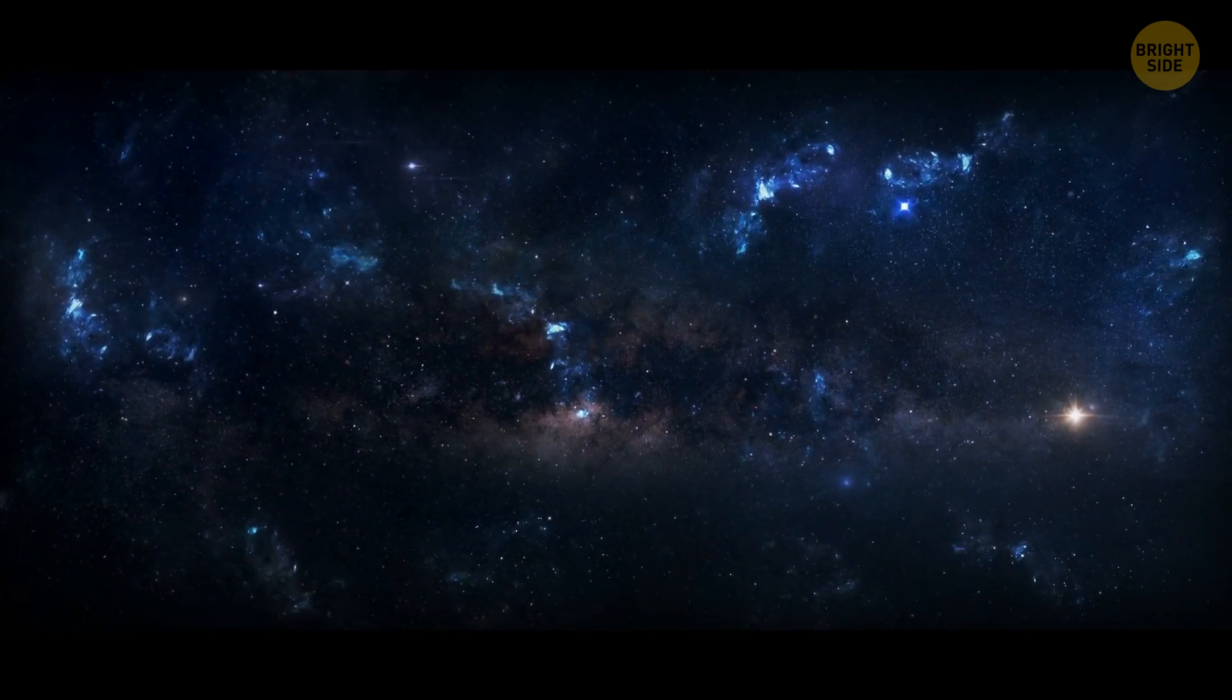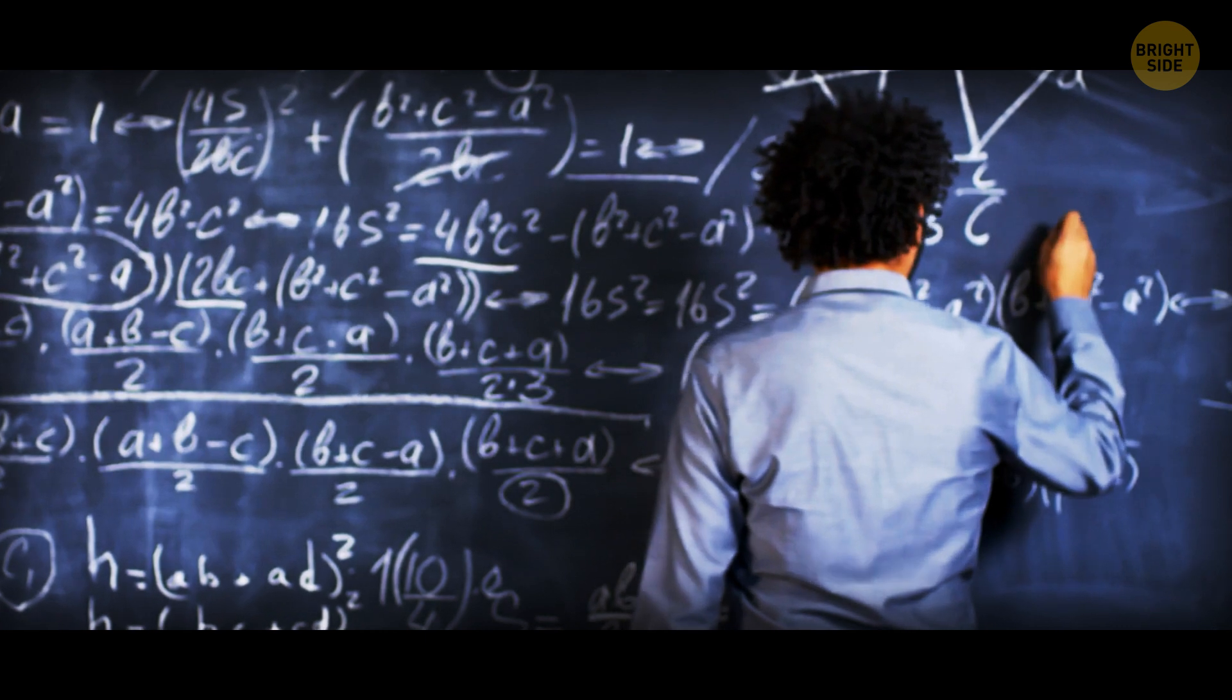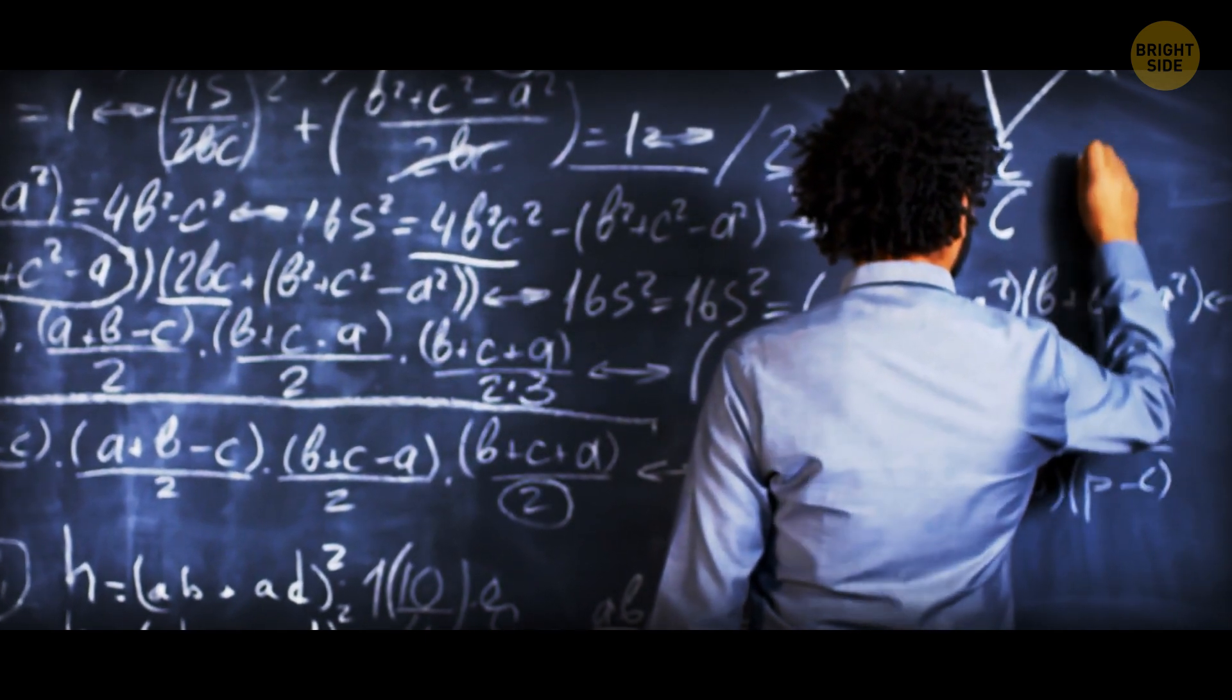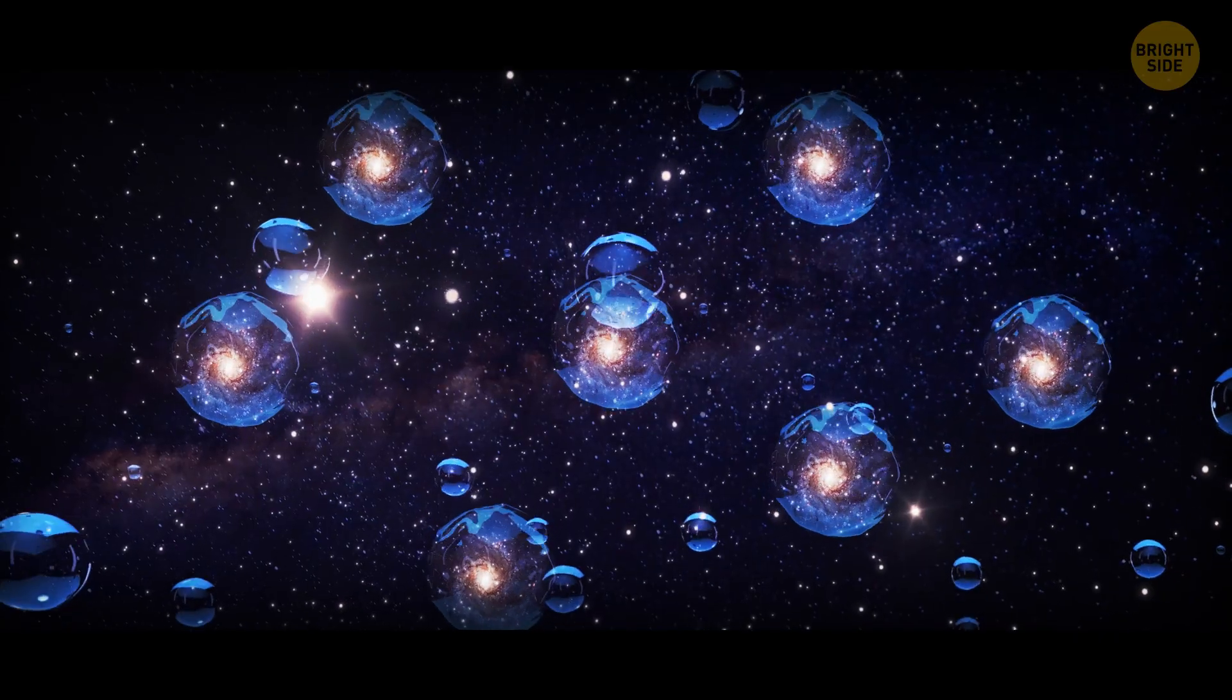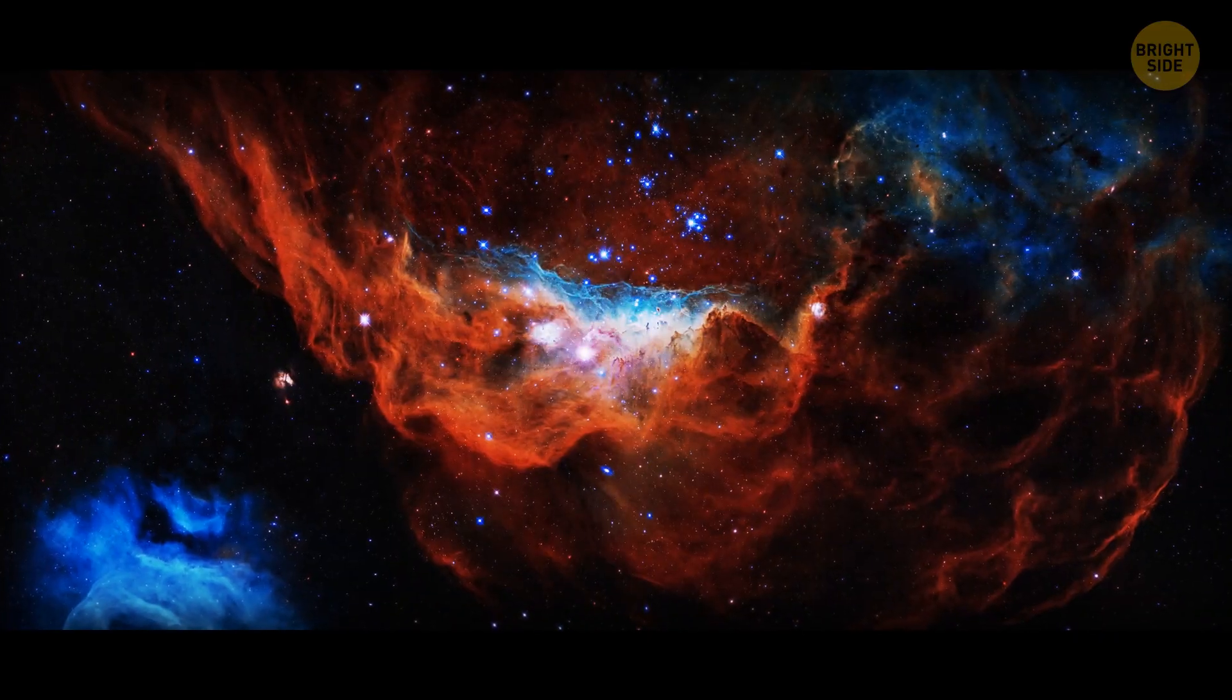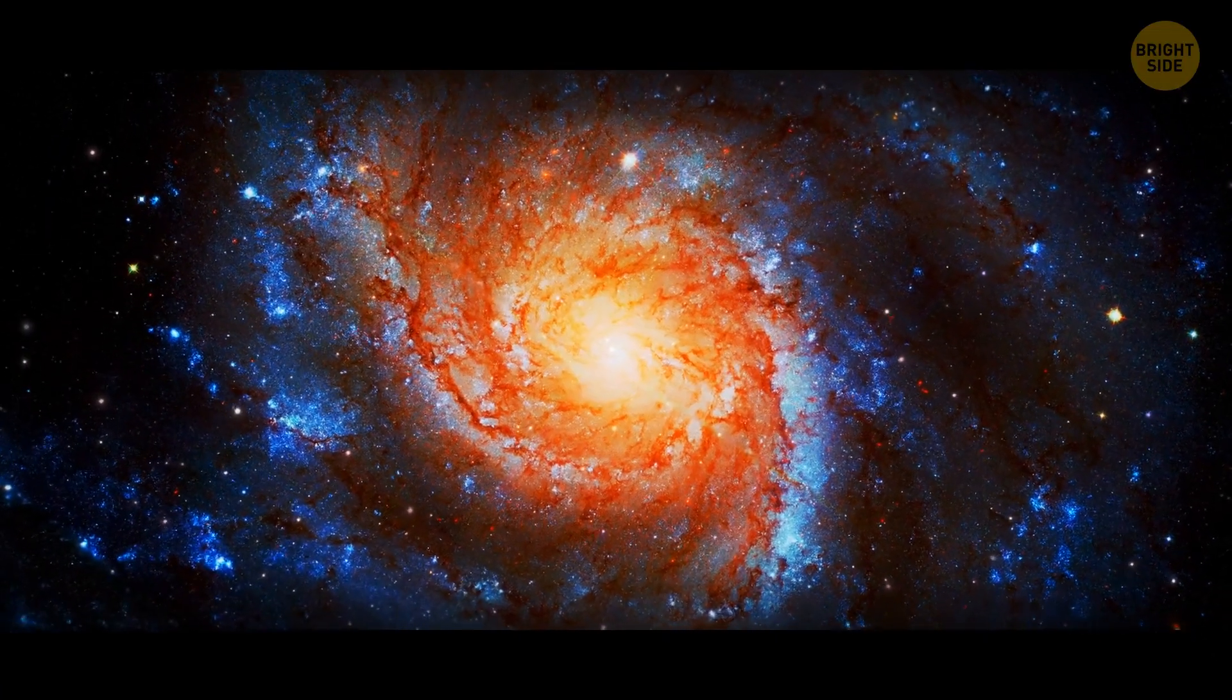Do we know the shape of the universe? Einstein had a theory of general relativity. It said that the universe could be in one of these three forms: closed, like a sphere; open, like a saddle; or flat, like a piece of paper.